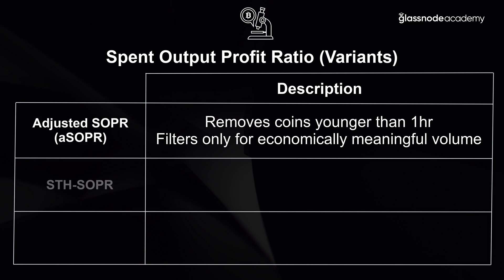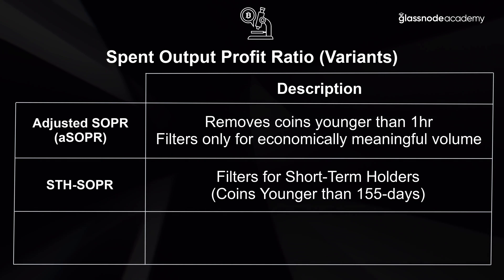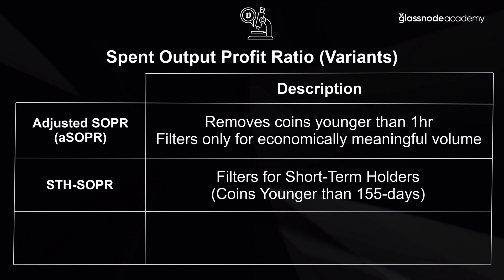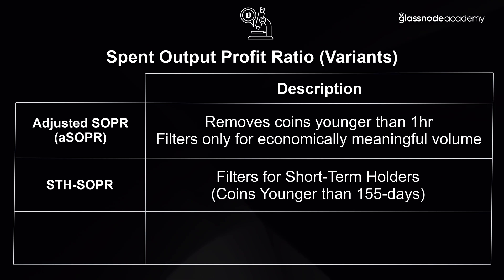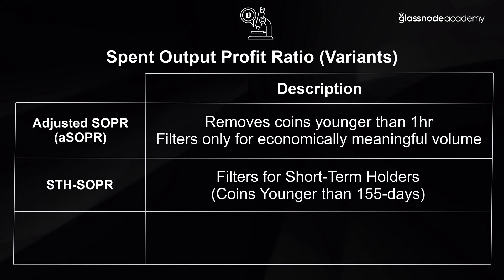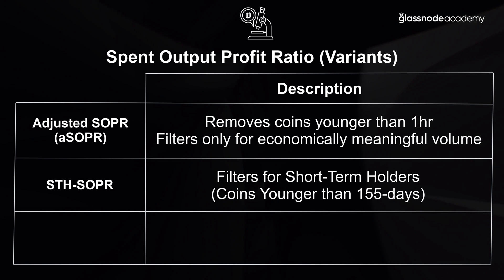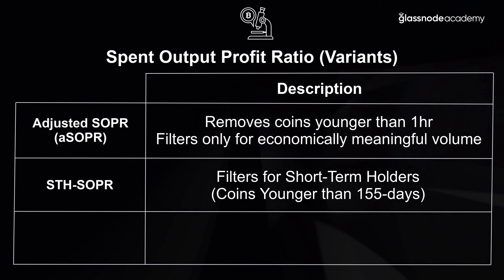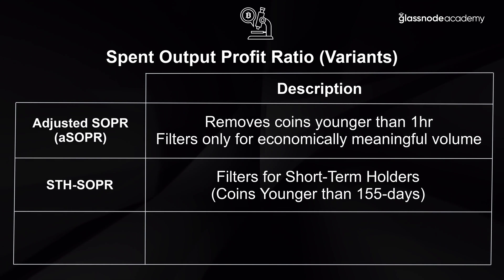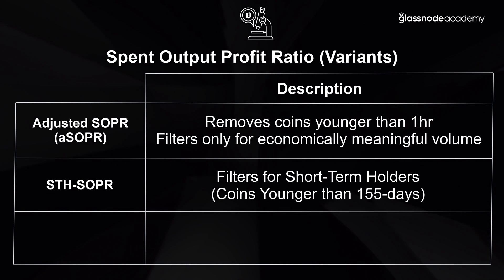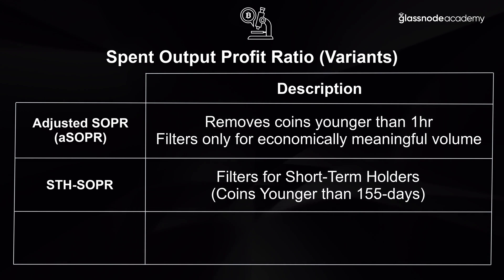The second variant is the short-term holder SOPR, which filters for coin holders that are younger than 155 days. It has a similar interpretation to the adjusted and standard SOPR, although it captures a subset of the market — people who have accumulated and moved their coins recently on-chain. On a statistical basis, coins younger than 155 days are more likely to be re-spent in the event of volatility, providing insight into this particular subset of the market.